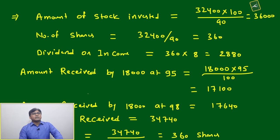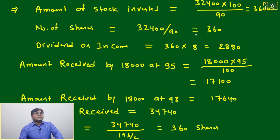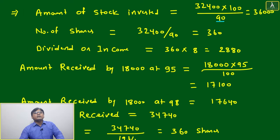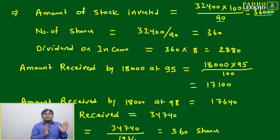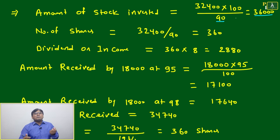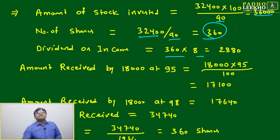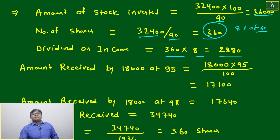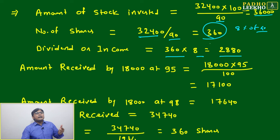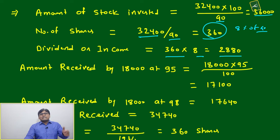For the understanding point of view, let's work through it. Amount invested: 32,400. She purchased at 90, so the face value amount of stock is 32,400 divided by 90, times 100 = 36,000. Number of shares = 360. Dividend or income = 8% of 36,000 = 2,880. So she receives a dividend of rupees 2,880.